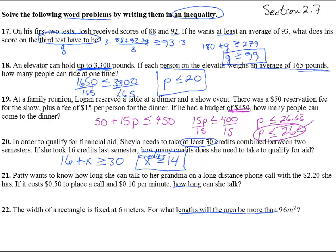Number 21, Patty wants to know how long she can talk to her grandma on a long distance phone call with the $2.20 she has. It costs 50 cents, so $0.50, plus $0.10 per minute. So take $0.10 times the number of minutes. And she only has $2.20, so she could talk equal to $2.20 or less than that. Okay, so we now have an inequality and we can solve that.